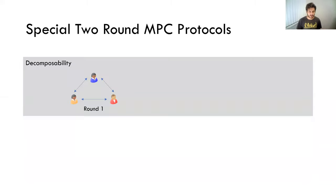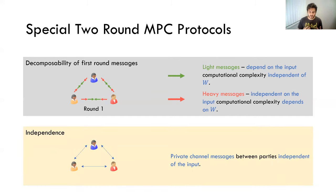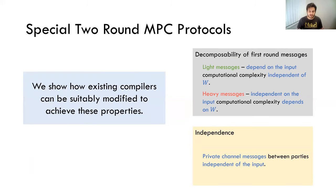Our main idea is to develop a round-efficient approach to this delegation of computation. As a starting point, we consider two-round MPC protocols with some special properties. The first is what we call decomposability of the first round messages: the first round messages of all parties can be split into light messages and heavy messages. Light messages depend on the input but have low computational complexity independent of W. Heavy messages are independent of input but their computational complexity can depend on W. The second property is that the private channel messages between parties are independent of the input.